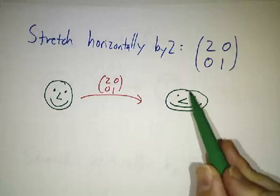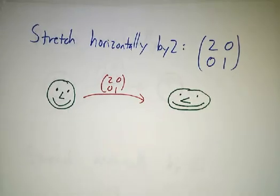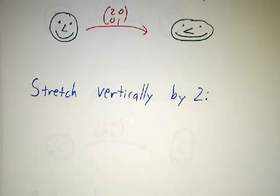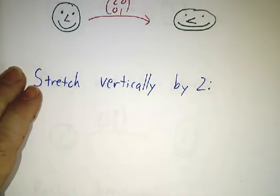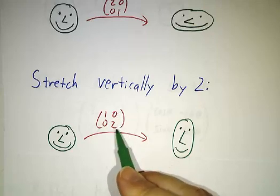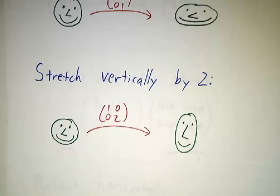Okay, I can't draw. This looks a little bit shorter than this, but imagine that I drew it well. If you want to stretch vertically by a factor of two, then (1,0) becomes (1,0) because you haven't changed the horizontal vector. But (0,1) becomes (0,2). So first column is (1,0), second column is (0,2). And that's how you take something and stretch it vertically.